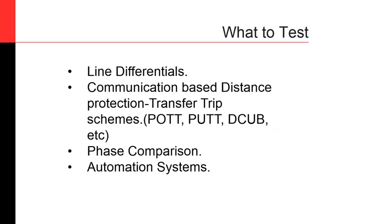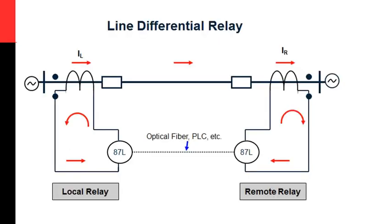What types of protections are tested using end-to-end testing? Line differentials, any communication-based distance protection, transfer trip schemes like permissive over-reach transfer trip, permissive under-reach transfer trip, phase comparison schemes, and automation systems — whether in transmission lines or distribution systems — where you have remote communications between relays that have to shift load or switch from one feeder to another. All of those are schemes prone to be tested using end-to-end testing.